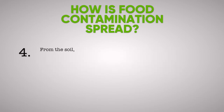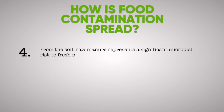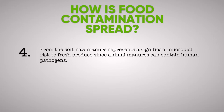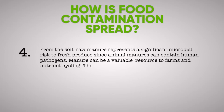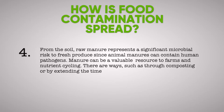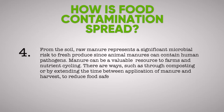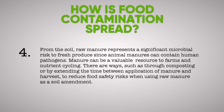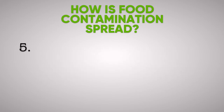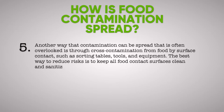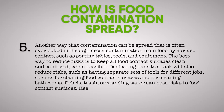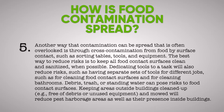4. From the soil, raw manure represents a significant microbial risk to fresh produce since animal manures can contain human pathogens. Manure can be a valuable resource to farms and nutrient cycling. There are ways, such as through composting or by extending the time between application of manure and harvest, to reduce food safety risk when using raw manure as a soil amendment. 5. Another way that contamination can be spread that is often overlooked is through cross-contamination from food by surface contact, such as sorting tables, tools, and equipment. The best way to reduce risk is to keep all food contact surfaces cleaned and sanitized before and after they are used.